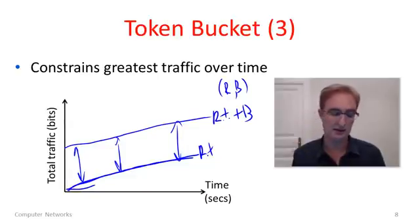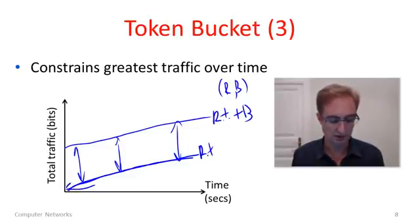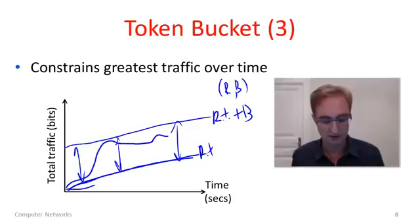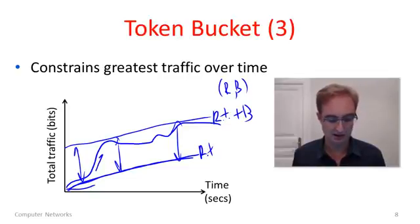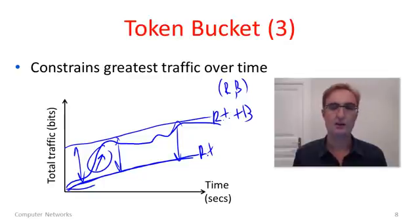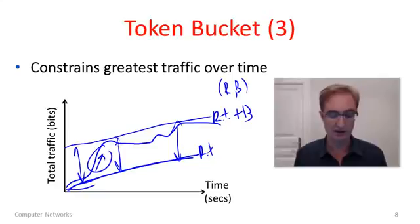That line indicates the maximum load that this traffic could place on the network. The real traffic might go something like this — the traffic went along at its rate for a little while and then suddenly crept up fairly quickly, sending faster than the average over a short period and getting near the upper line.